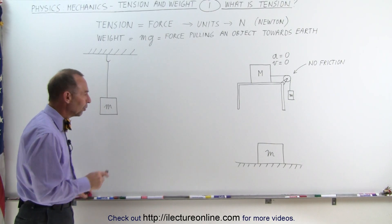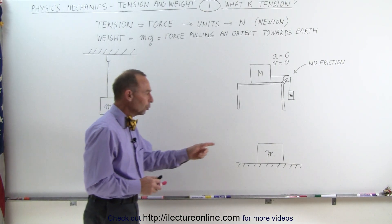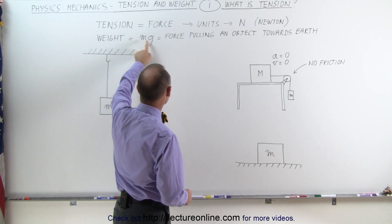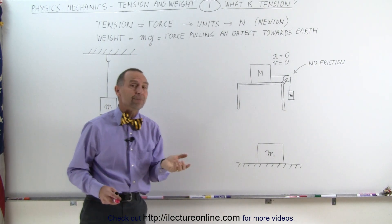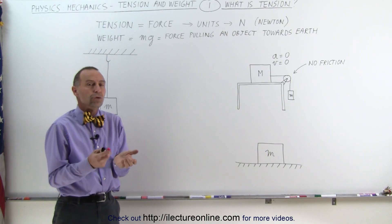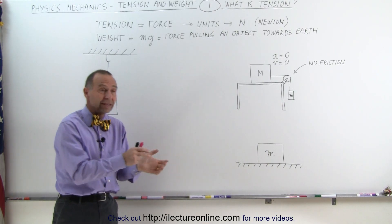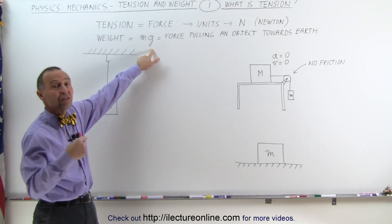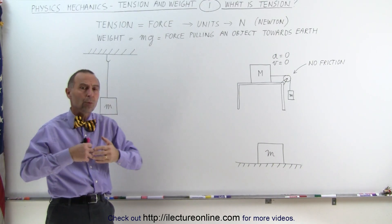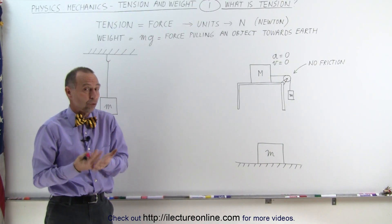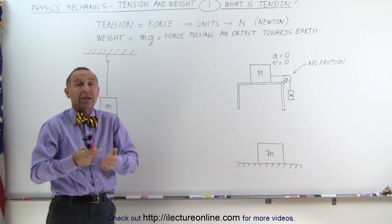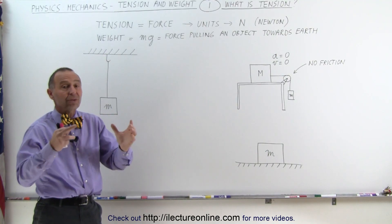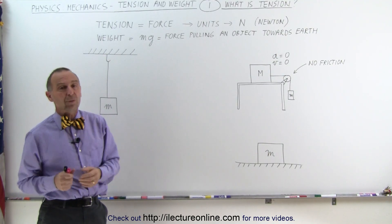Let's take a look at the concept of weight. The weight, as we can see here, is equal to the product of the mass of an object times the acceleration due to gravity. If you go to the surface of the moon, the weight of an object will be different than on the surface of the earth because g is different on the moon. And if you go out in space where there are no planets or stars nearby, the weight would be zero because there would not be an acceleration due to gravity.